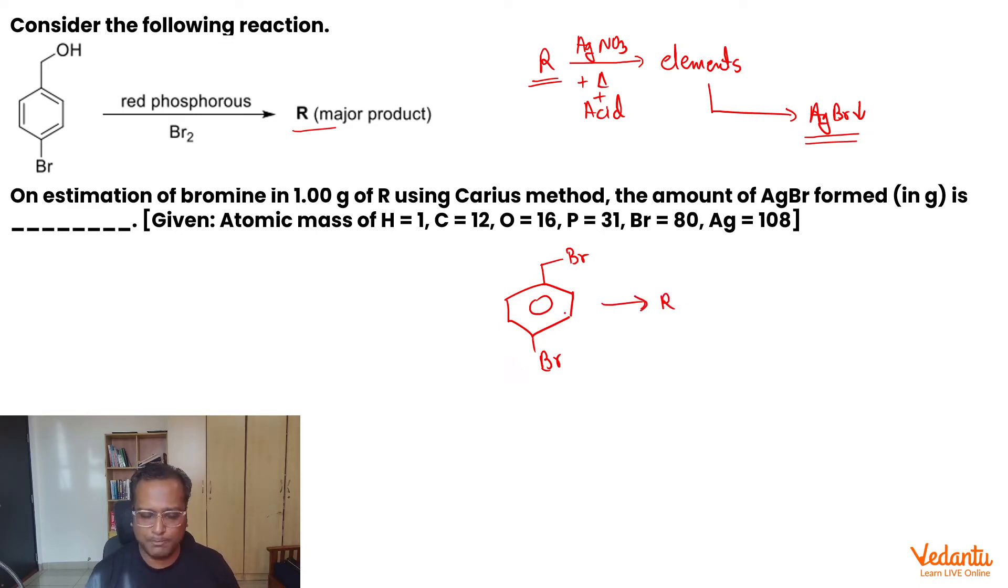So one mole of compound R contains two moles of bromine. So how many moles of R do you have? The moles of R that you have is, one is the weight given. Molecular weight will be what? 160 for bromine, right?